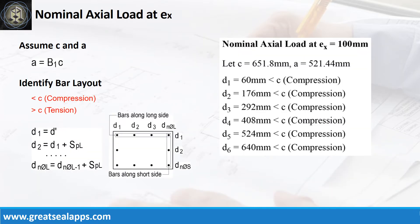To get the nominal load at eccentricity sub x equals 100 mm, let neutral axis C equals 651.8 mm and height of stress block A equals 521.44 mm. Given column length equals 700 mm and steel covering equals 60 mm, follow the given computations to get the distances of each bar layer from the edge of the column and force type relative to the neutral axis.